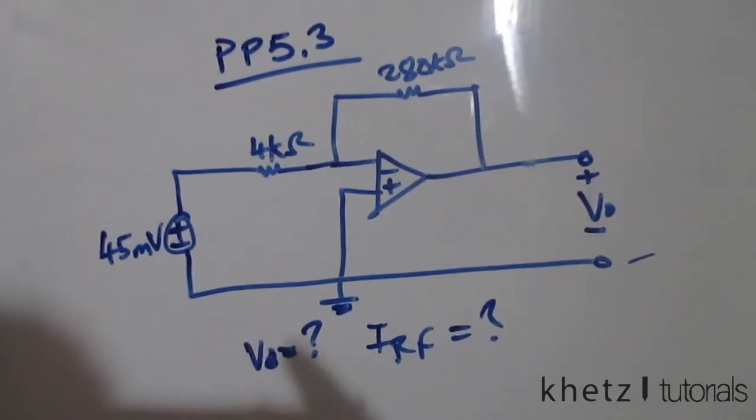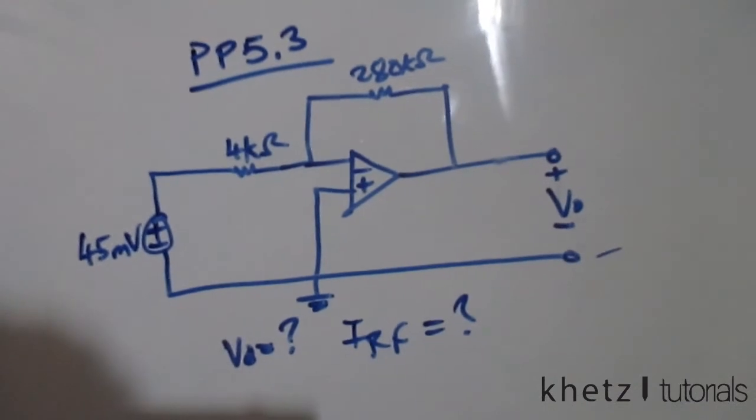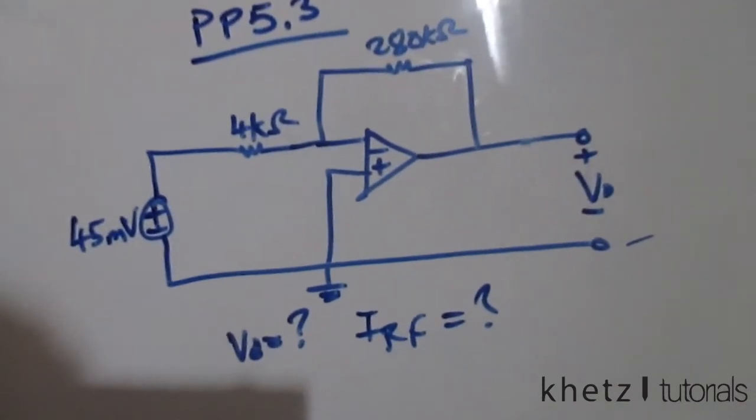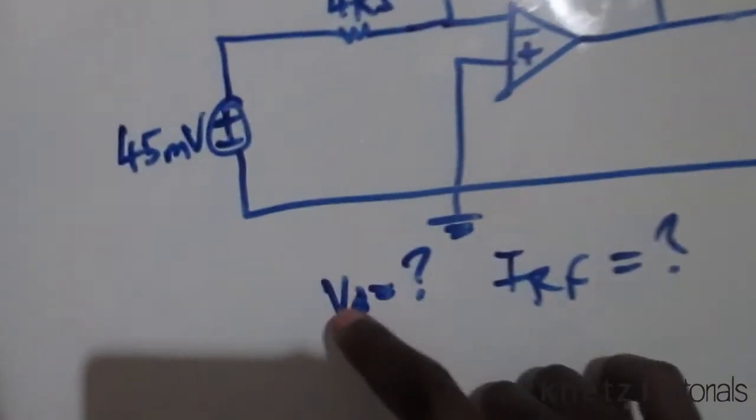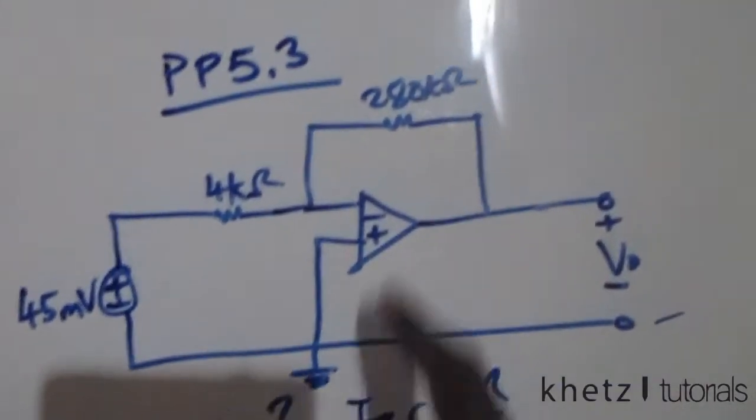Welcome to Katz tutorials. In this video I'll be covering practice problem 5.3. Given the circuit, we need to find Vo as well as the current which flows through the feedback resistor.